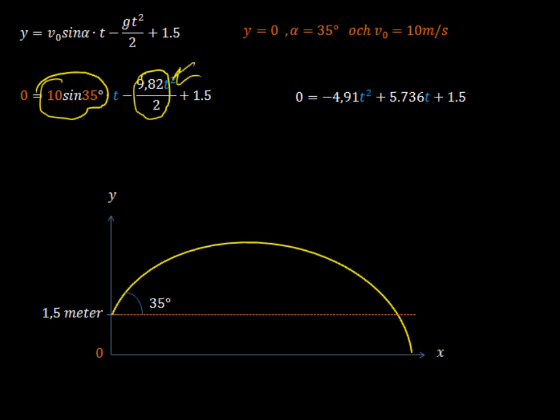This part here, the sine of 35, it just comes out as a number. You multiply it by 10. And then this, you just simplify, and then I've rearranged it. See, this is the t squared part. So, okay, if that was too fast, just back it up, watch it again. But do you see now what kind of equation that is? It's a second-degree equation.